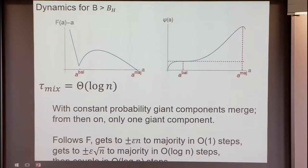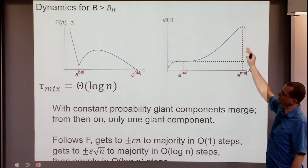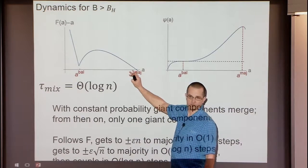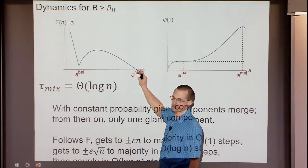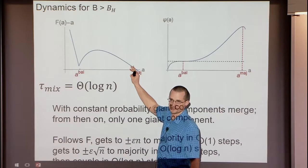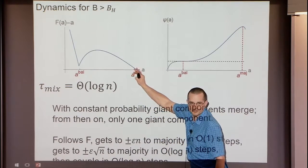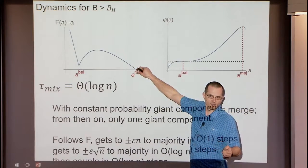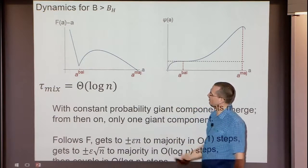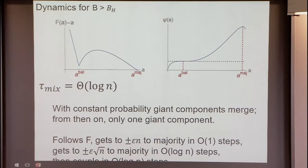If you are above the second threshold, there is drift toward the unique fixed point, but no abrupt place that gets us there quickly. We get closer and closer but slower and slower. We need about log n steps to get within plus-or-minus square root of n, then couple due to fluctuations, and then do a little more coupling. So below the first fixed point the mixing time is O(1), above the second it's O(log n) — there's a slight difference between the running times.